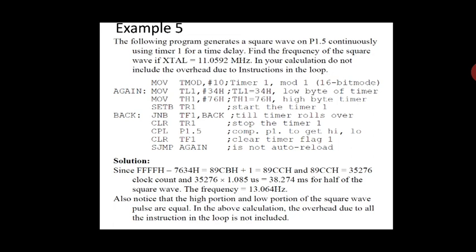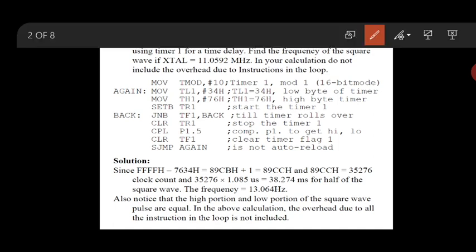Once TF1 is set, we stop the timer using CLR TR1. We then complement P1.5 — if the bit is 1 it becomes 0 — and jump back to reload TL1 and TH1. This process repeats, generating the required delay from the timer for both the high and low portions of the square wave from Timer 1.